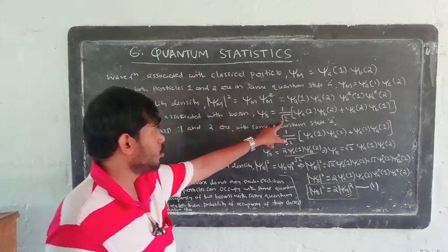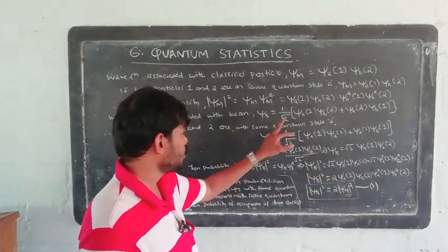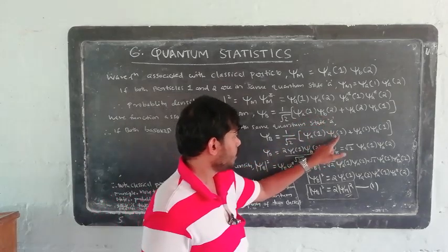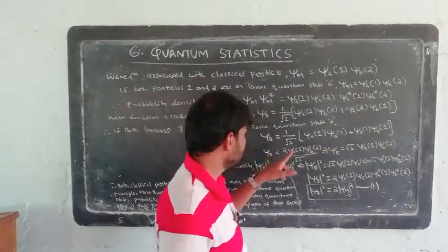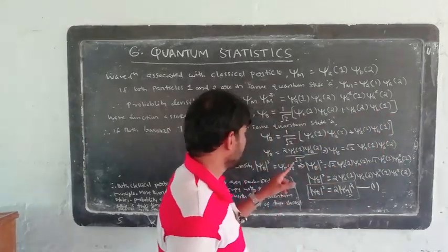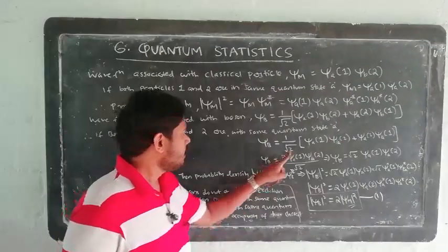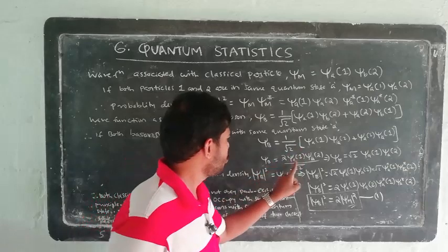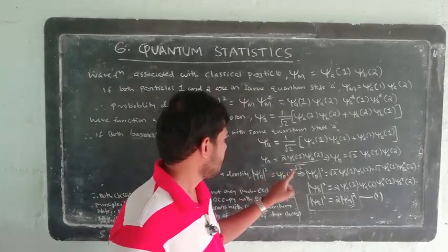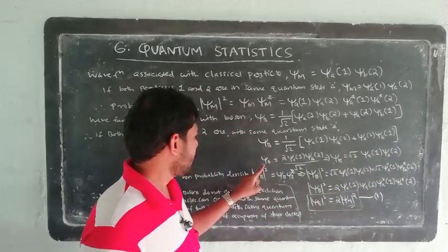The bosons wave function is: 1 by root 2 times [psi_a of 1 times psi_b of 2 plus psi_a of 2 times psi_b of 1]. When both particles are in state a, psi_b equals 1 by root 2 times [psi_a of 1 times psi_a of 2 plus psi_a of 2 times psi_a of 1], which simplifies to 2 psi_a of 1 times psi_a of 2, divided by root 2, giving root 2 times psi_a of 1 times psi_a of 2.